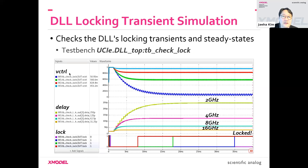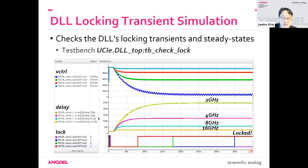Here's a set of simulation results using a test bench built for the DLL top. I can just show you without running the simulation. These are the locking transients of the DLL at different frequencies — one plot shows the transient of the control voltage, the second shows the transient of the resulting delay of the VCDL, and the last one is the lock signal.